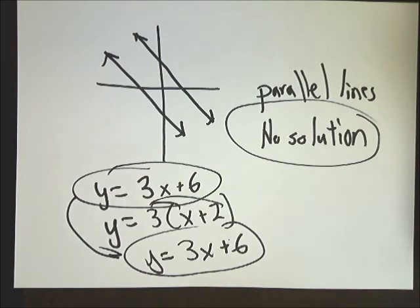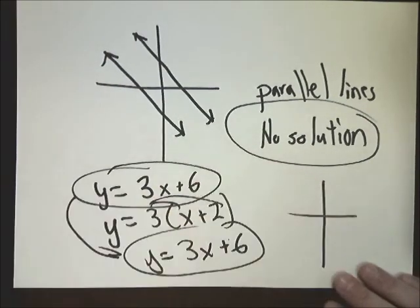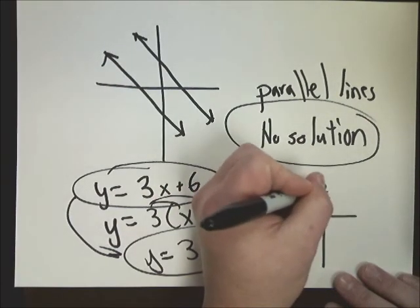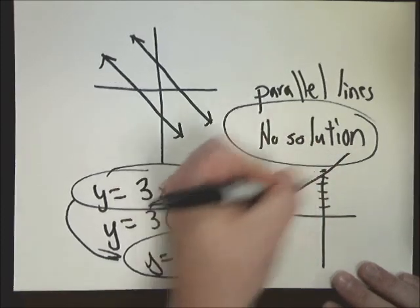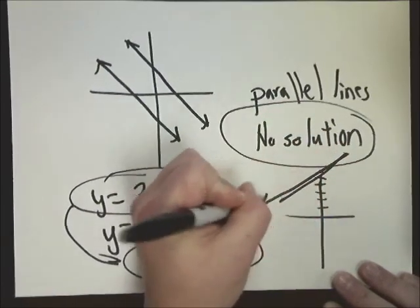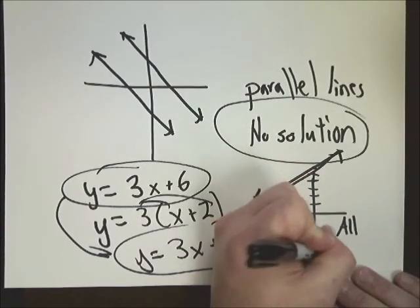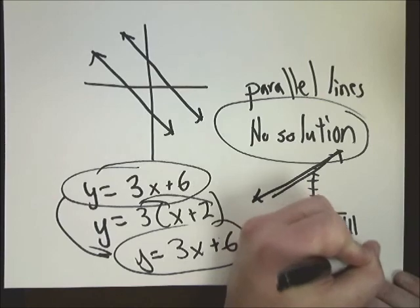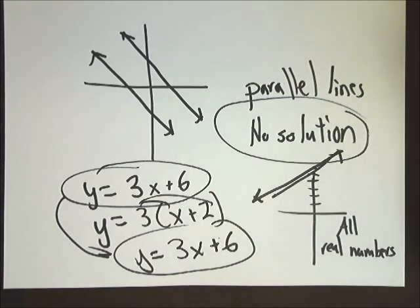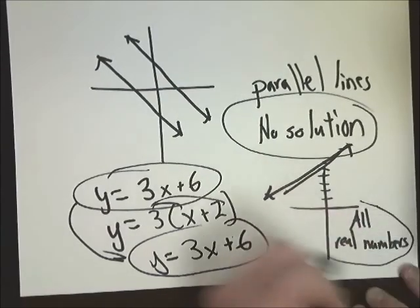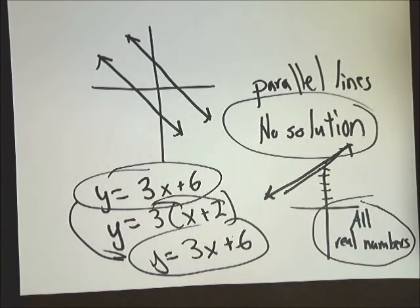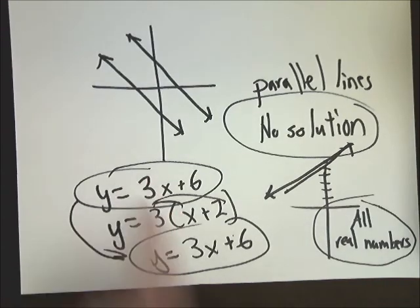So when I have two representations of the same line to draw it, it would be the same line just drawn twice. So I say that I have all real numbers, which means no matter what I plug in for Y and X, it's the exact same line. Two lines with the same slope and the same intercept are the same line. So you could have special situations where you have no solution, or you have an all real numbers situation in which you have the same line just written in two different ways like we had here.